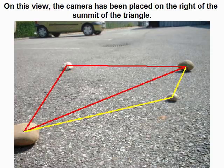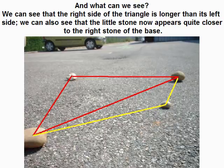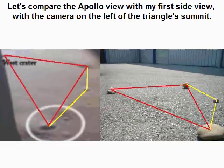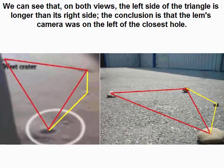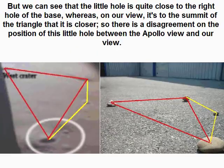The camera has now been placed on the right of the summit of the triangle. We can see that the right side of the triangle is longer than its left side, and the little stone now appears quite closer to the right stone of the base. Comparing the Apollo view with the first side view — camera on the left of the summit — we can see that on both views the left side of the triangle is longer than the right side. The conclusion is that the LEM's camera was on the left of the closest hole. But on the Apollo view, the little hole is quite close to the right hole of the base, whereas on our left-camera view it is closer to the summit — so there is a disagreement on the position of this little hole.